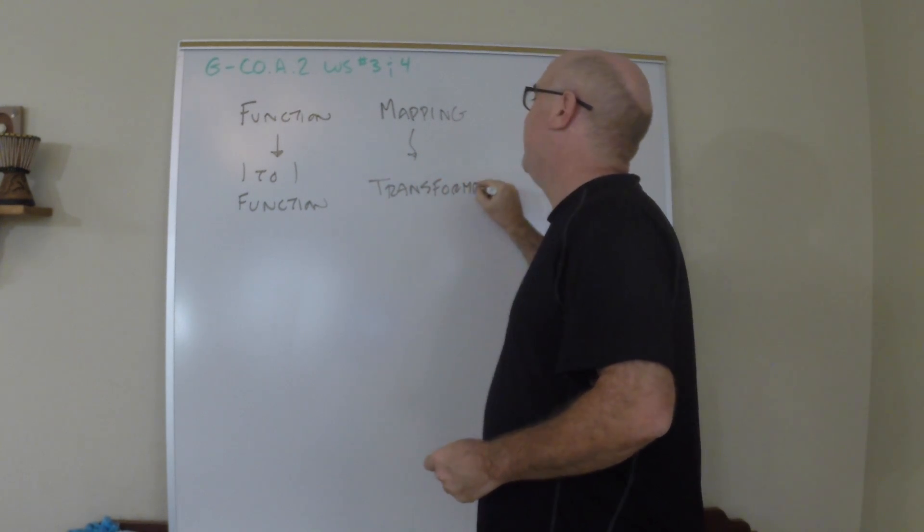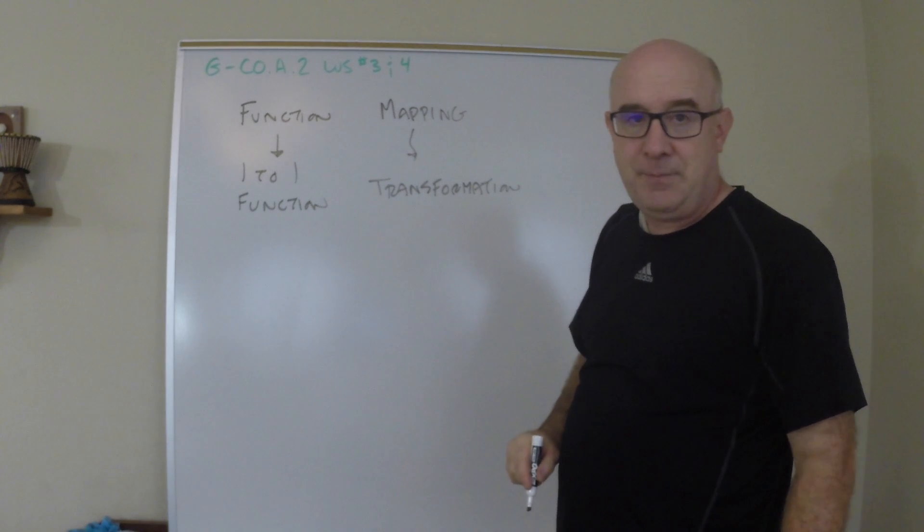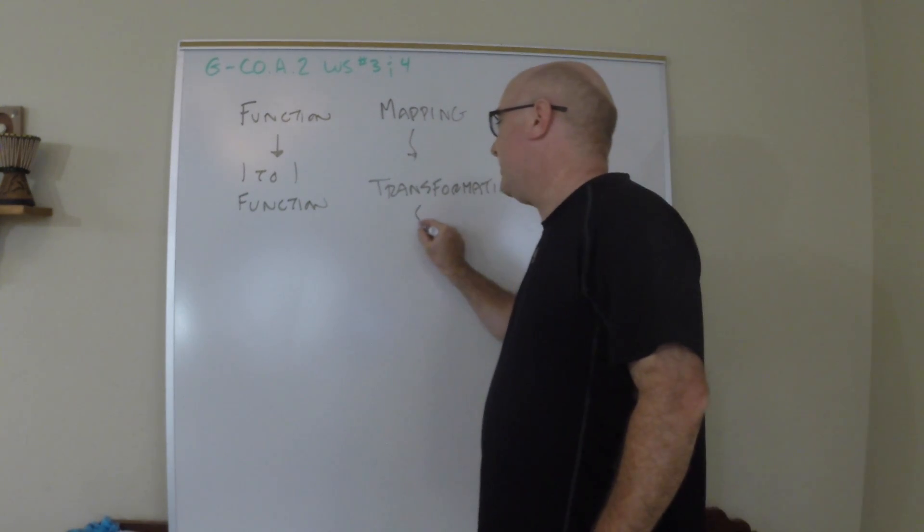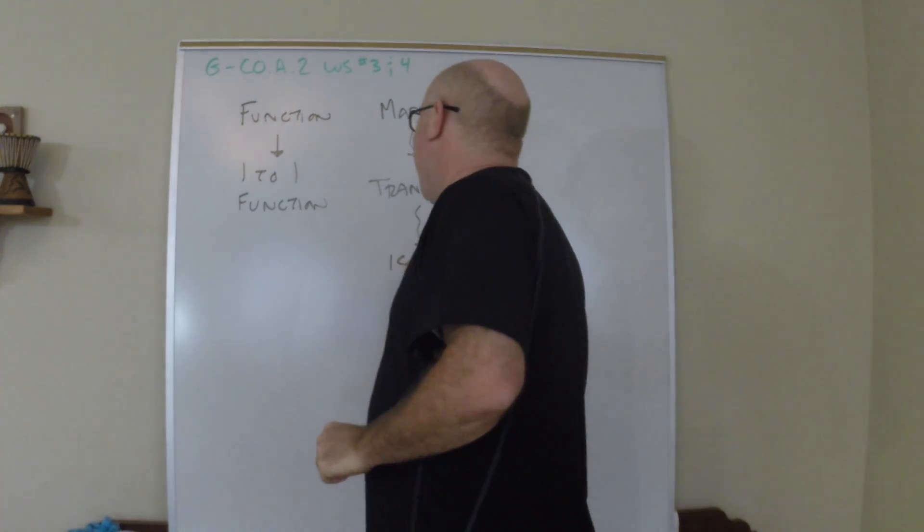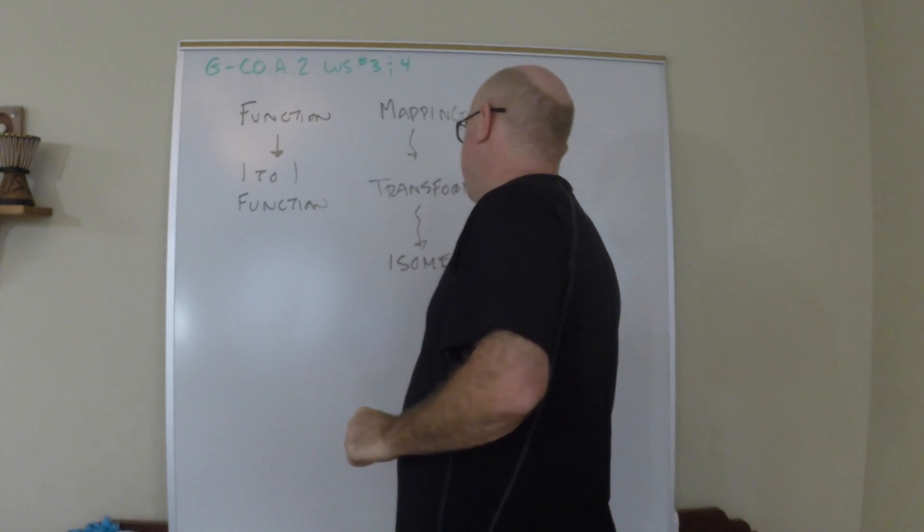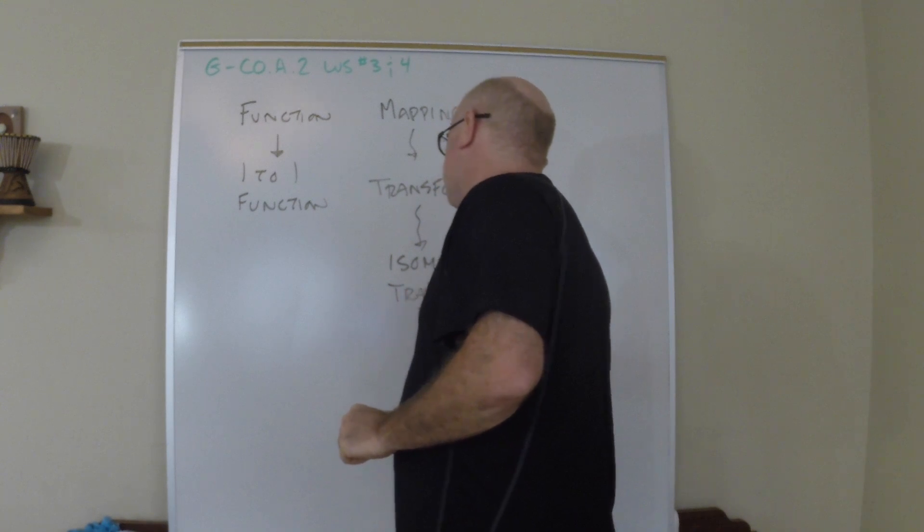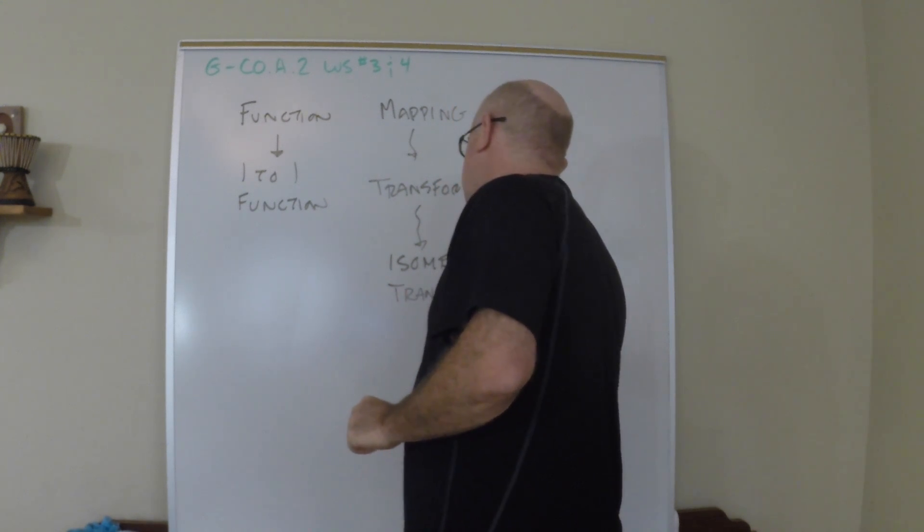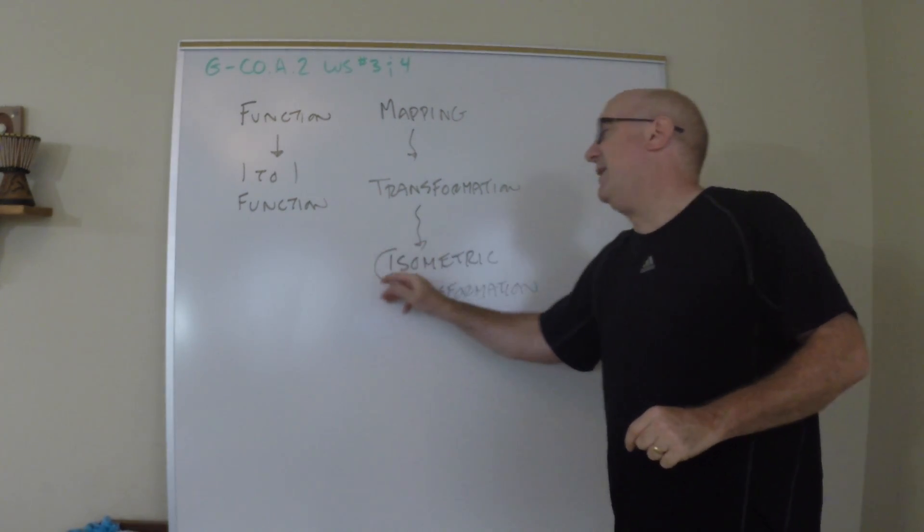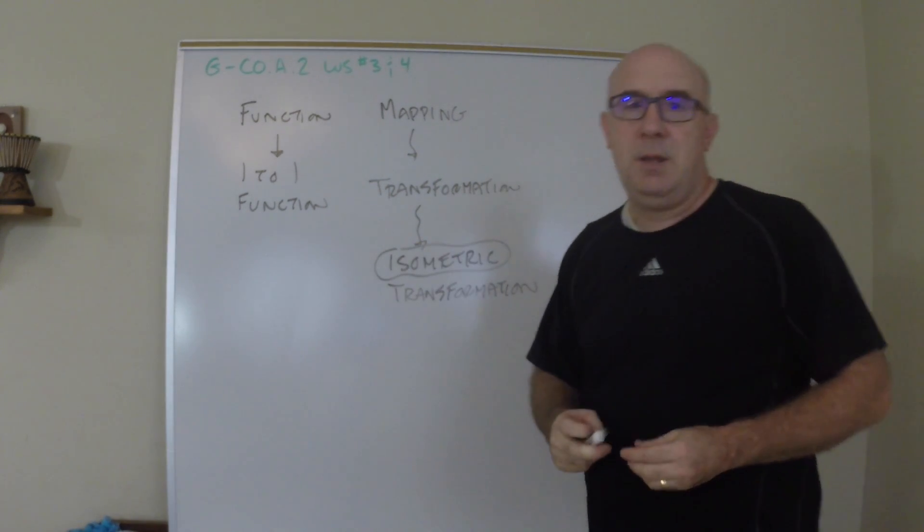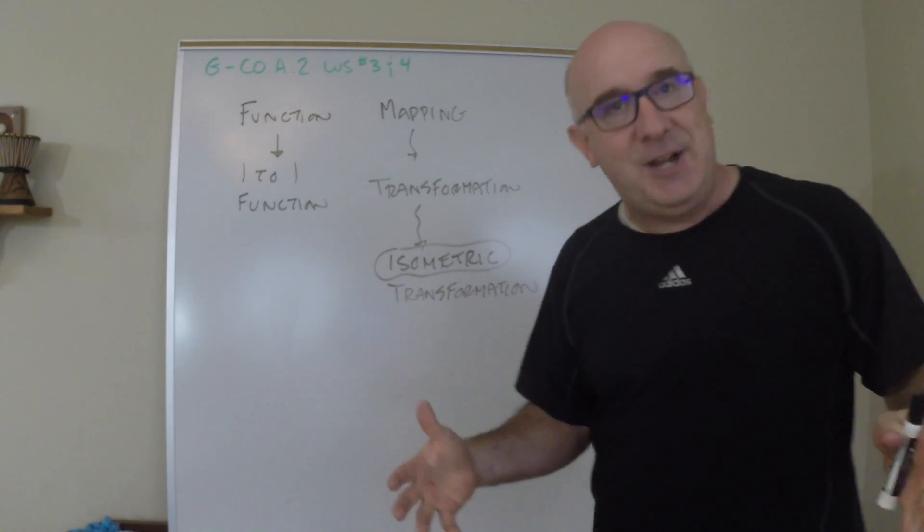And now we will classify that just a little bit more to an isometric transformation. Now the word isometric means to preserve the distances in the shape, the angles in the shape.